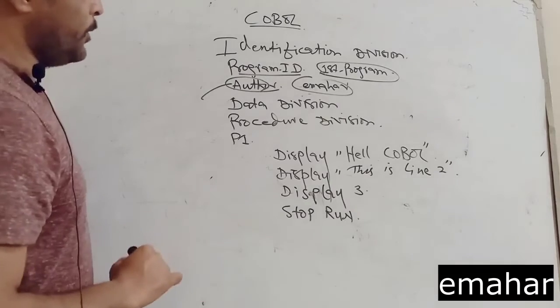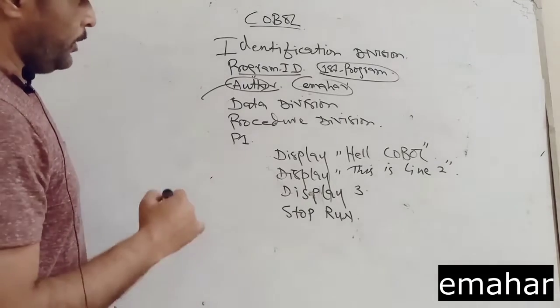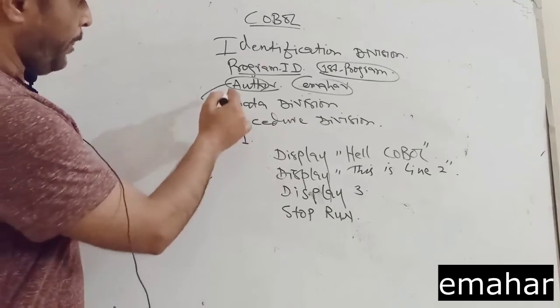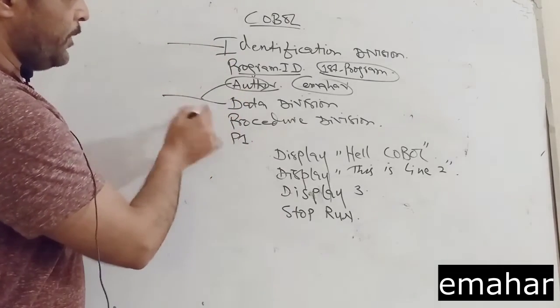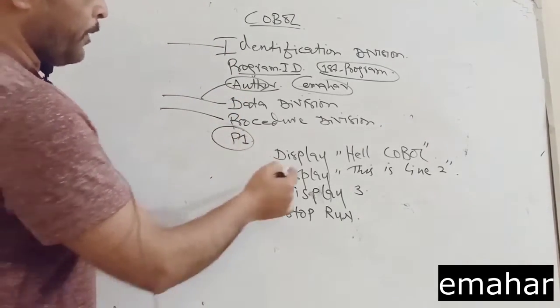There are four divisions in COBOL. If we do not need environment division, then we can omit it from the program. Identification, data division, procedure given procedure name, paragraph name.